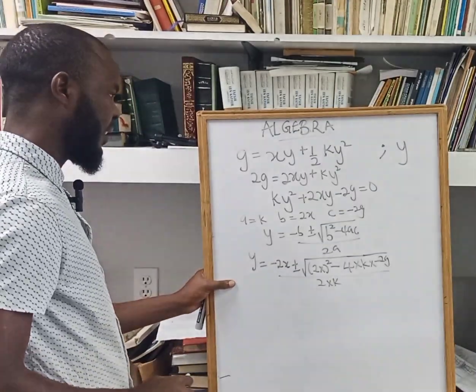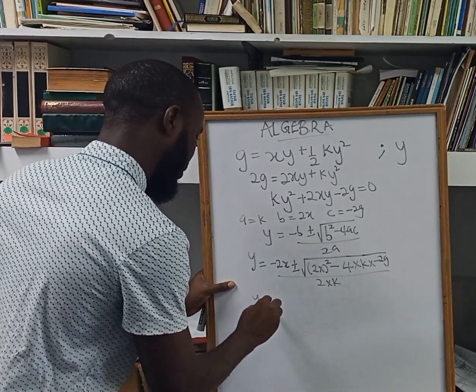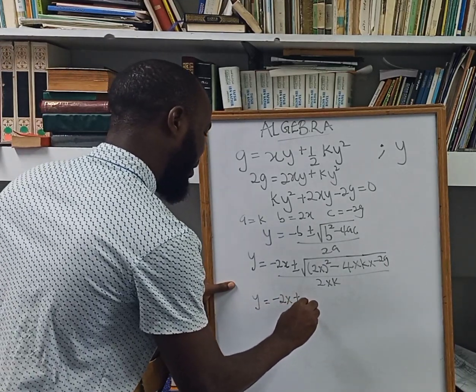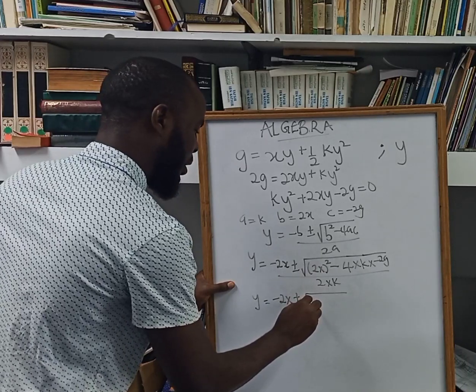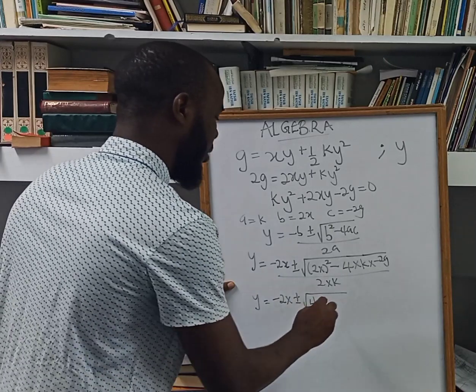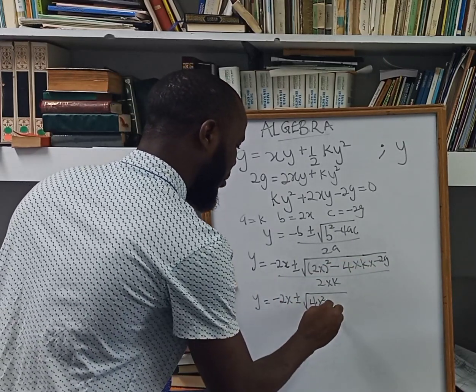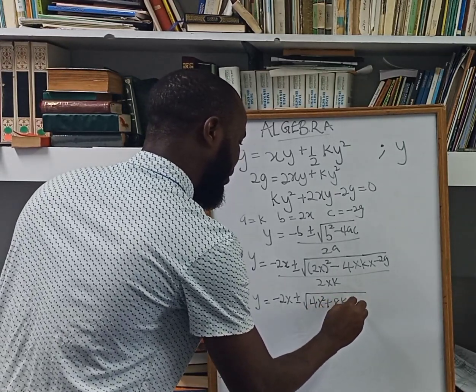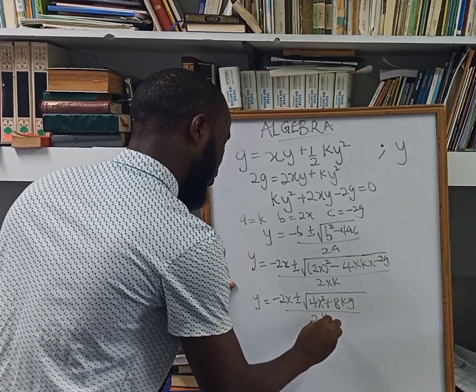So solving this, here I have my y equals negative 2x plus or minus root. Here, 2x squared, so the power of 2 is going to give me 4x squared, negative times negative is going to be plus 8kg, all over 2k.